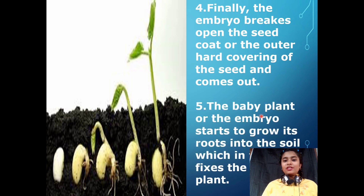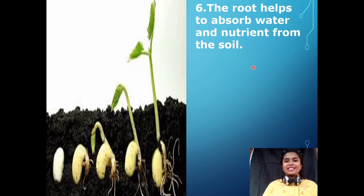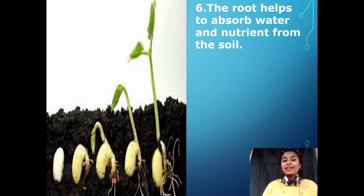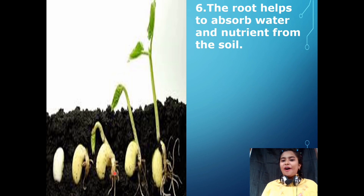The baby plant's embryo starts to grow its roots into the soil, which in turn fixes the plant. The root helps to absorb water and nutrients from the soil. The root fixes the baby plant into the soil and also helps in absorbing water and nutrients.